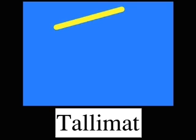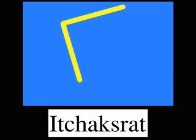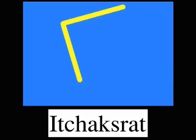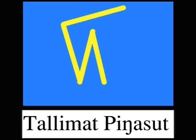The fifth number is Talimut. It is shown by a horizontal slanted line. The sixth number is Itchakrat. It is shown by one group of five plus one. The seventh number is Talimut Malagop, shown by one group of five plus two. The eighth number is shown by one group of five plus three.